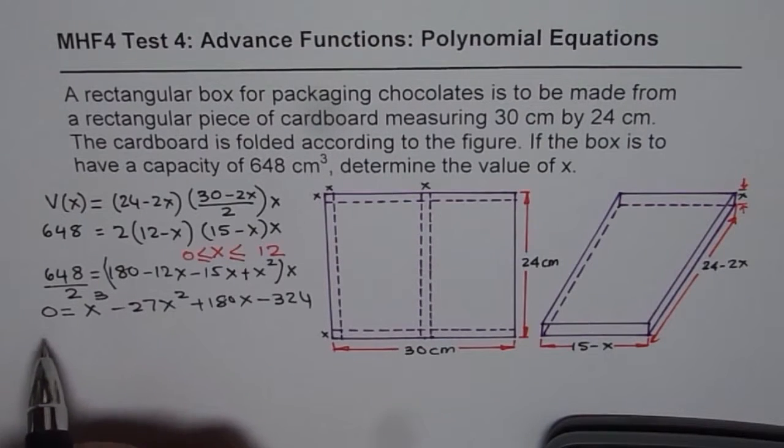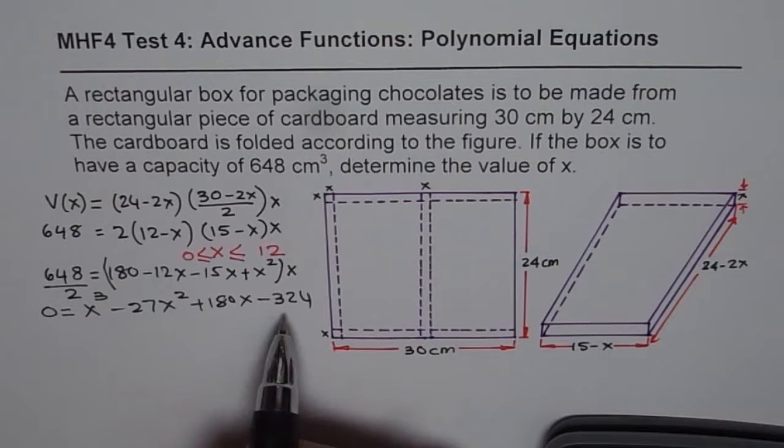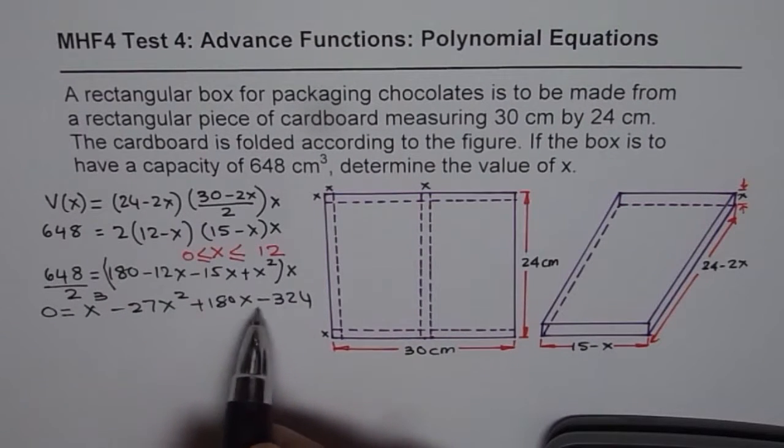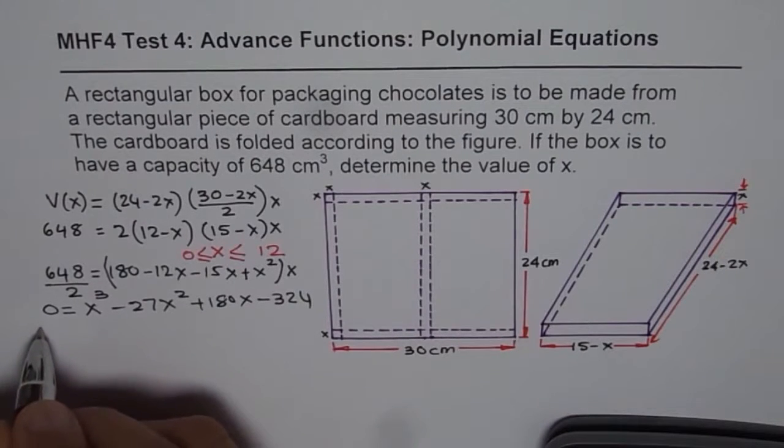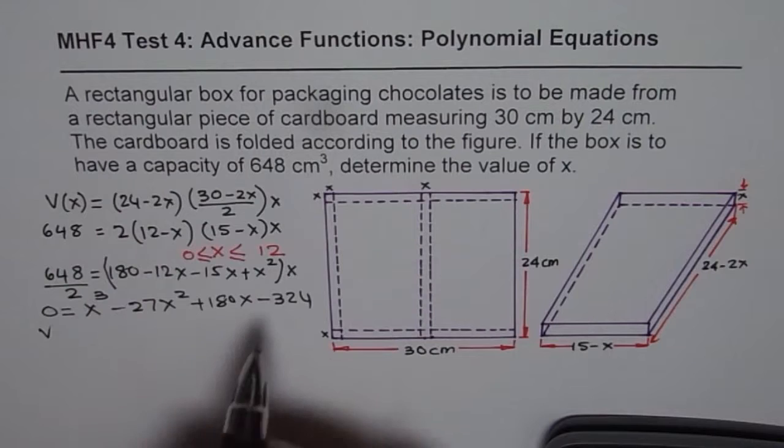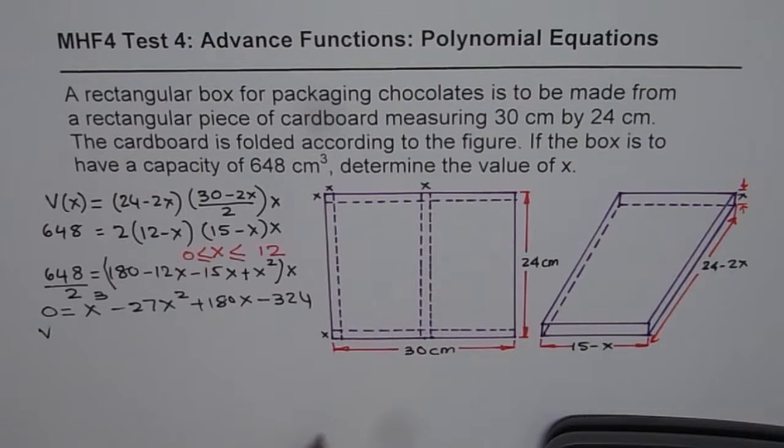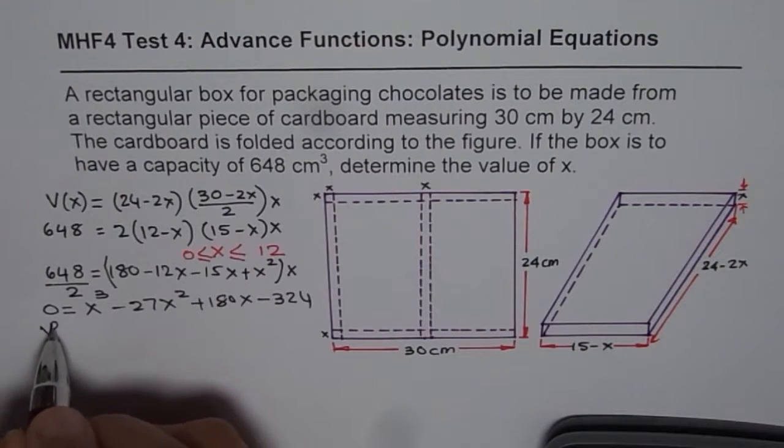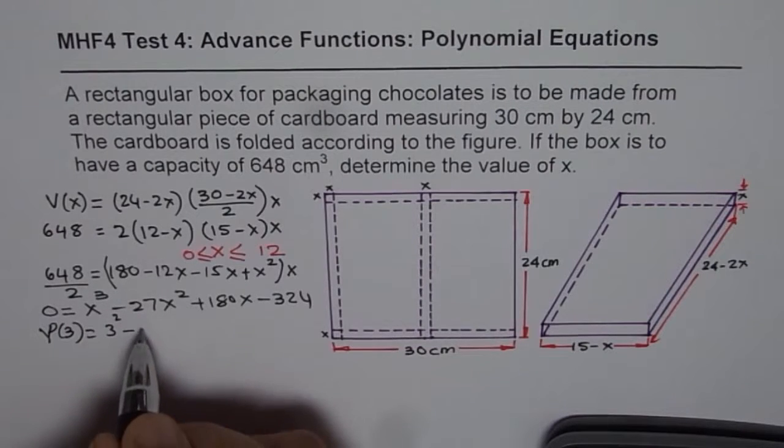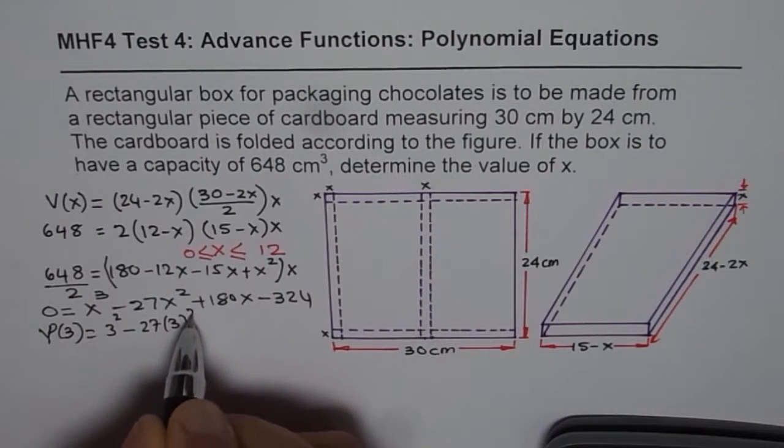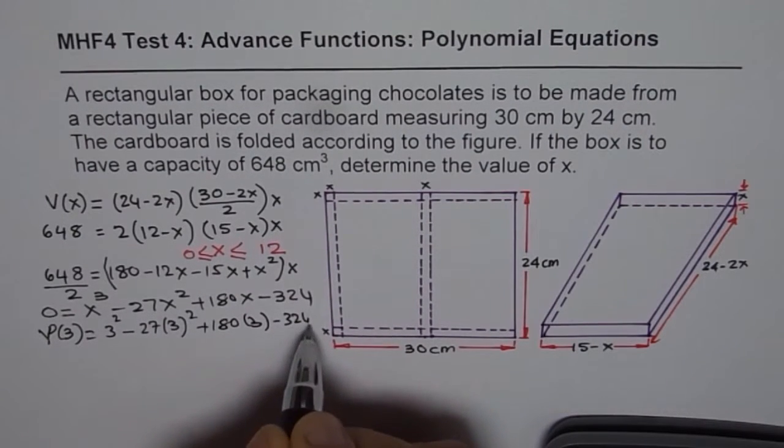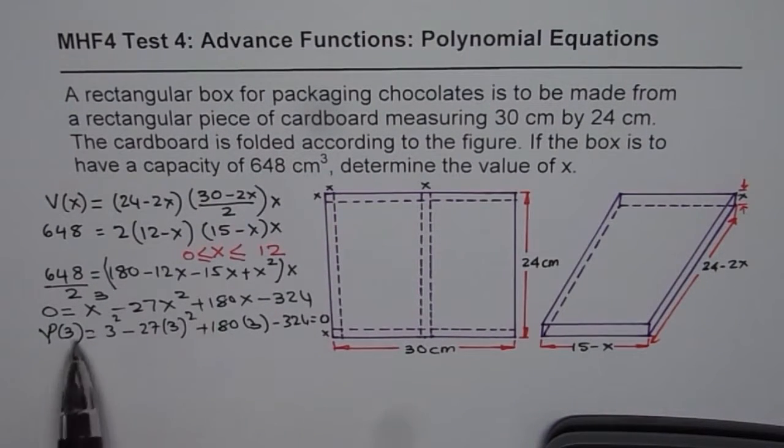So begin by trying 1, 2, 3. So once you plug in 1, you will probably get a negative answer. And then, because this is minus, this is 324 is a bigger number. So try 2 and 3. For 3 we get actually 0. So because I do not have space, so I am not really giving you all that. But when you plug this 3 value, I should not write volume. Now this is a polynomial. So we should say this polynomial for 3 will give me 3 cubed minus 27 times 3 squared plus 180 times 3 minus 324. And if you use calculator, this value is 0. That means 3 is a factor.